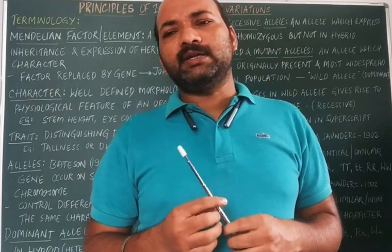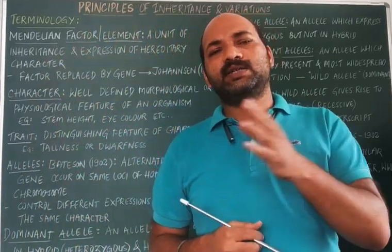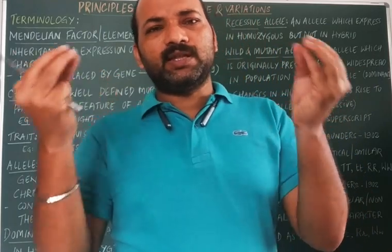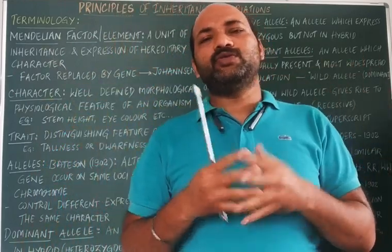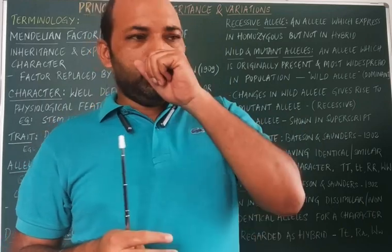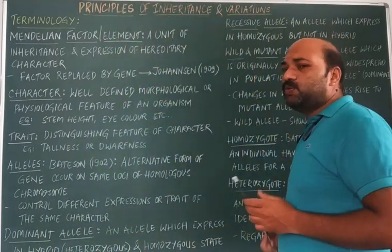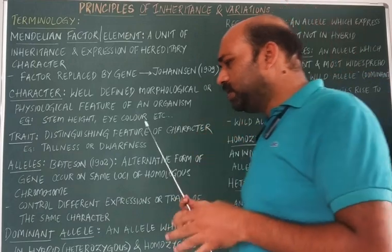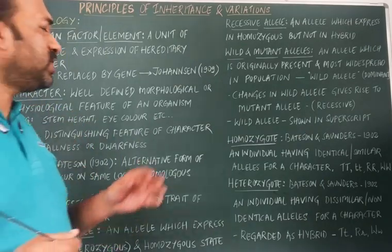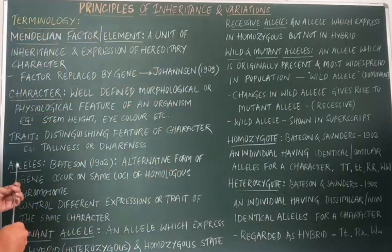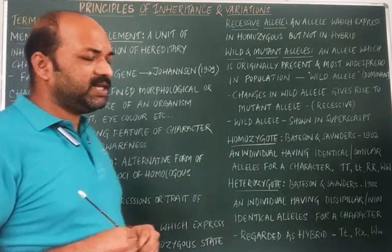A male gamete has 23 chromosomes and a female gamete also has 23 chromosomes. When these two gametes fuse together, both the maternal and paternal chromosomes fuse, and the characters regulated by them also get fused — that is why individuals show variations. Now let's start with the terminologies. The first one is called the Mendelian factor or Mendelian element.